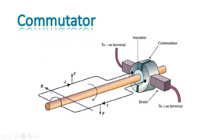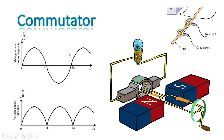When the coil is in the position shown, one segment of the split ring is in contact with the positive terminal of the brush and the other segment is in contact with the negative terminal. The EMF induced is in one direction in one part of the coil and in the opposite direction in the other part. As the coil rotates, segments swap contact with the brushes, and in effect the alternating waveform is converted into a pulsating DC waveform. This is how DC generators work.